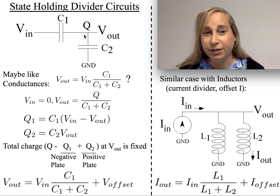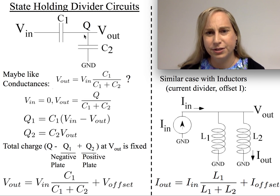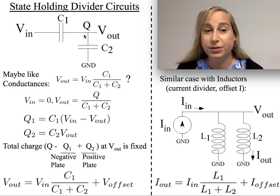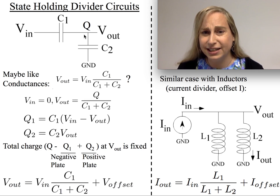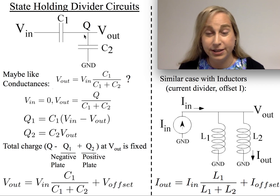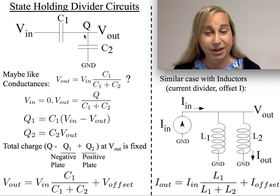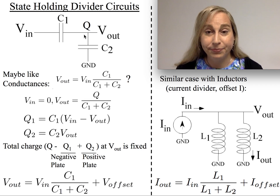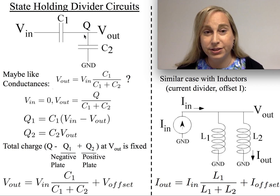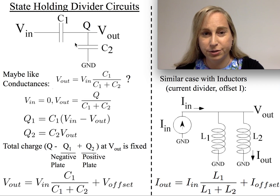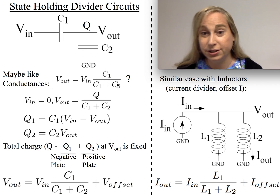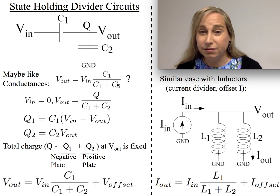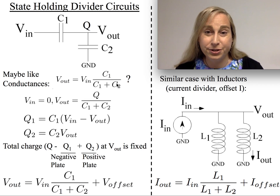When you look at this circuit, one thought that may come to you is that maybe capacitors kind of feel like conductances. If you think in parallel and series combinations, it's kind of the same combinations you see from conductances. There are a couple of different ways of why you might think that, and if you did, you might say, well, maybe the divider would just be that the output equals the input times a ratio, say C1 over C1 plus C2. And if you started with that assumption, your intuition is actually pretty good.